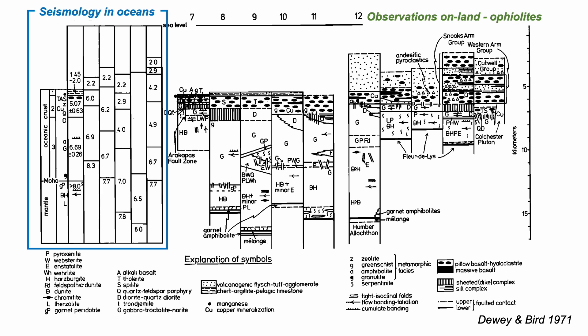For Dewey and Bird, rather than find a single type of ocean crust as appeared to be the case when considering marine seismology, the outcrop example showed lots of variations. For sceptics, they might ask how much of these variations is reflective of seafloor geology and how much is a product of deformation, dismemberment and slicing during the incorporation of these rocks into the mountain belt.